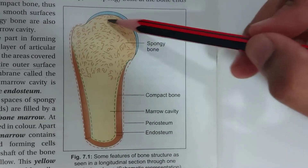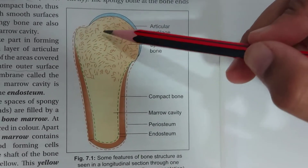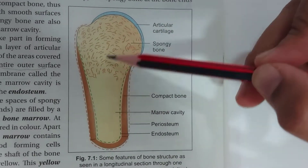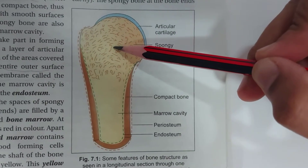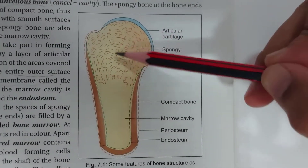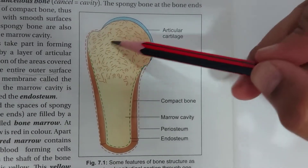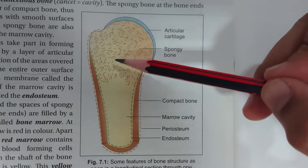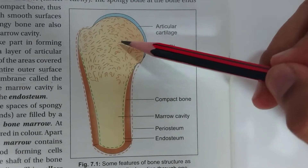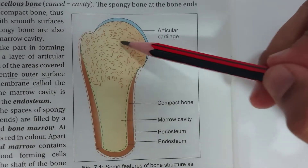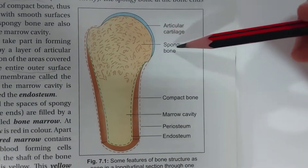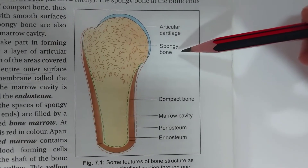When we examine the end of the long bone or the diaphysis of the flat bone, we find that the marrow cavity doesn't extend into them. It is filled by a meshwork of plates of bone and contains numerous spaces. This whole appearance resembles a sponge, and this kind of bone is known as spongy bone or cancellous bone.